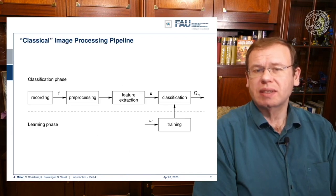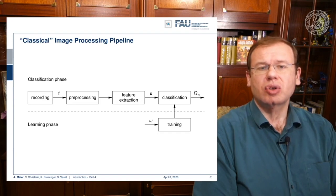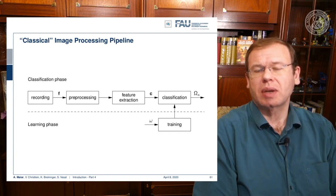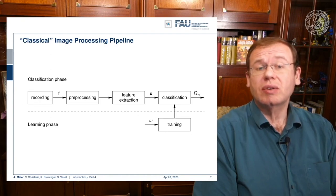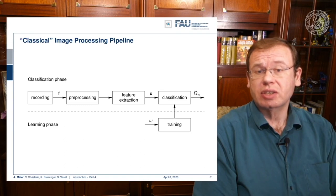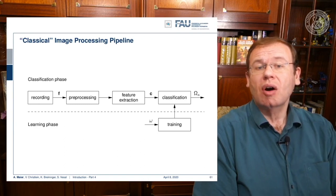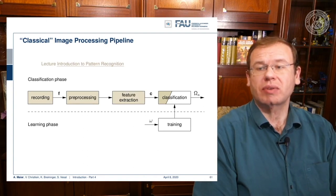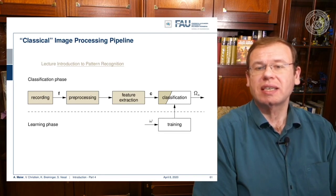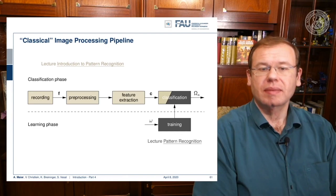If you have attended previous lectures of our group, you should know the classical image processing pipeline of pattern recognition. It starts with recording and sampling, followed by analog-to-digital conversion. Then you have preprocessing and feature extraction, followed by classification, where you also have to do the training. The first part of this pipeline is covered in our lecture on introduction to pattern recognition, and the main part of classification is covered in the pattern recognition lecture.